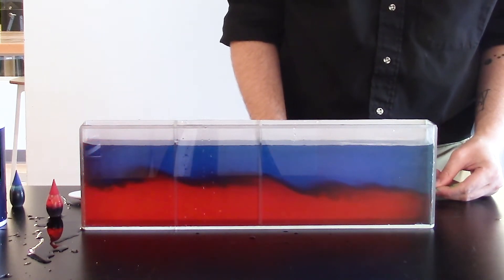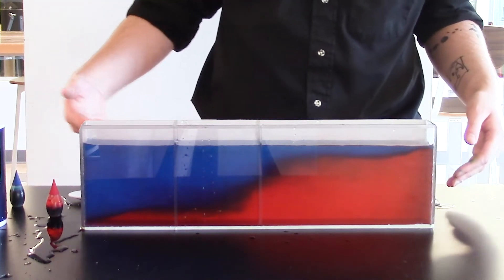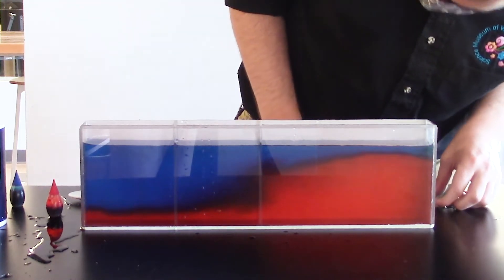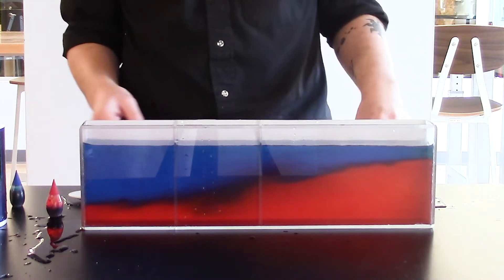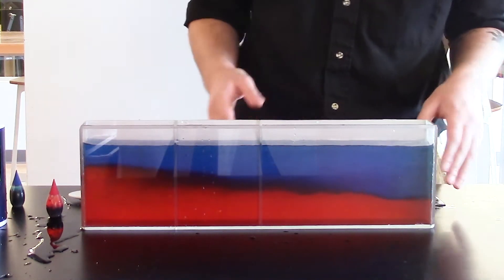So you can see that blue fresh water is moving over the top and that red salt water is going underneath. You can see that the salt water is denser than the fresh water with all that salinity that's in there.